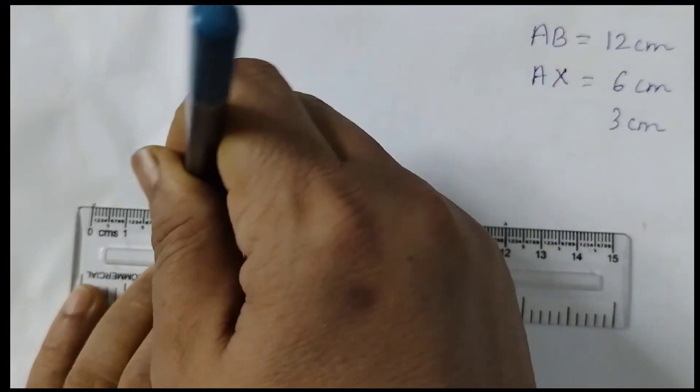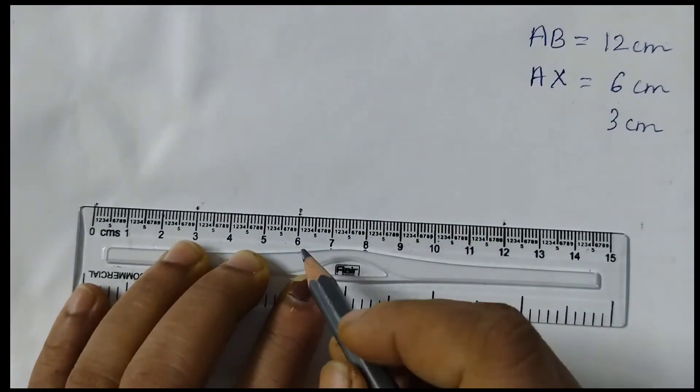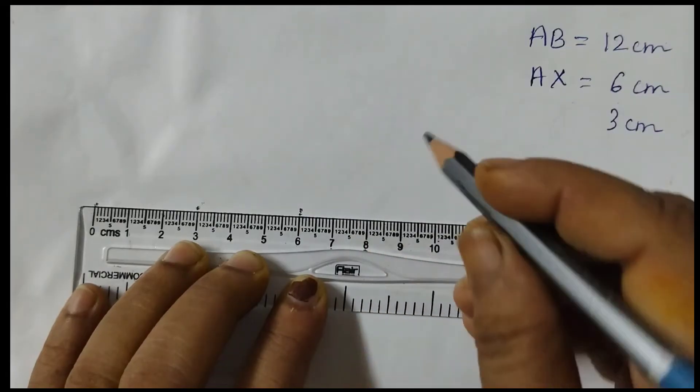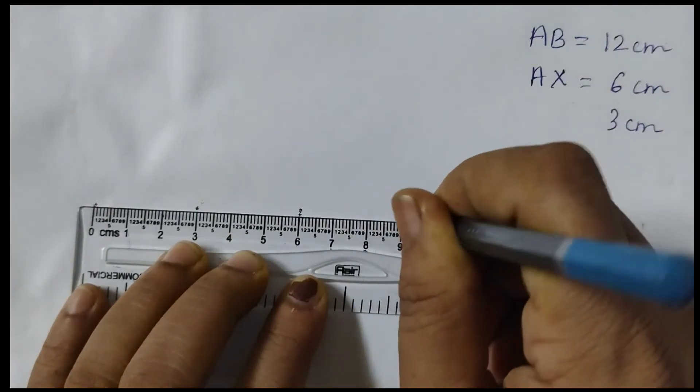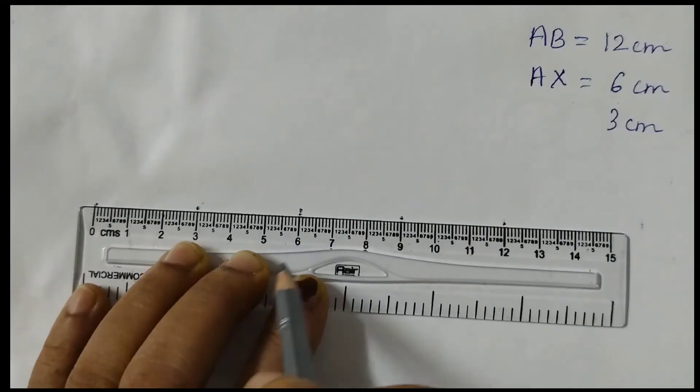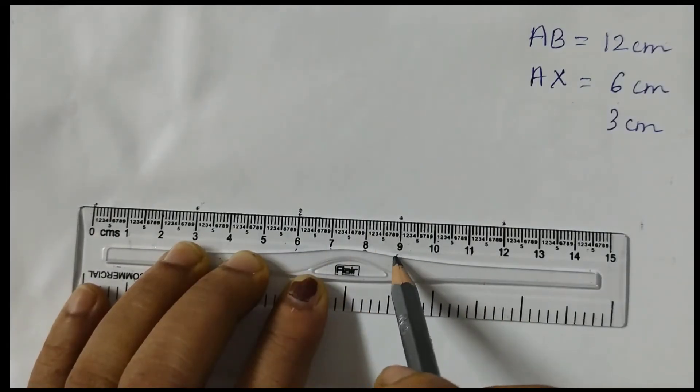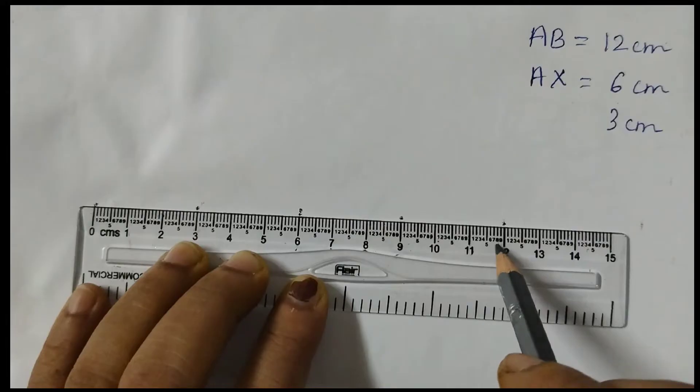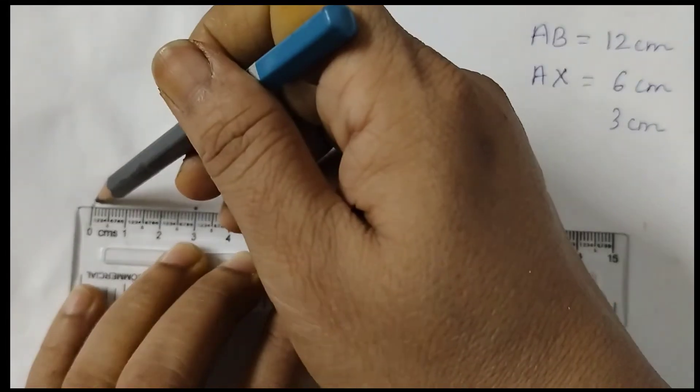Then the midpoint of 0 to 6, that means if I take 0 and 6 what is the midpoint? So that will be 3. That's why I have written 3 here. Now from 6, 1, 2, 3, 9 is the midpoint. 0, 3 centimeters, 6 centimeters, 9 centimeters, 12 centimeters. So my marking I have completed.